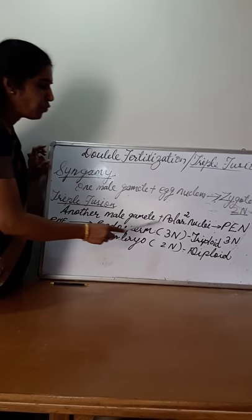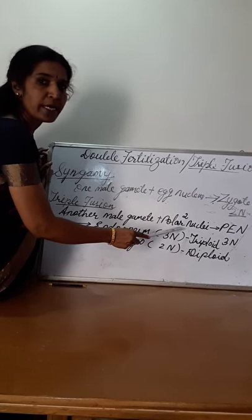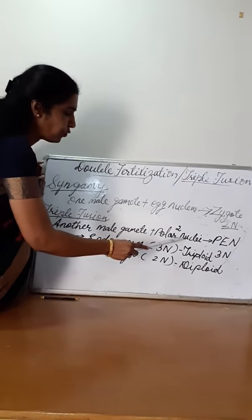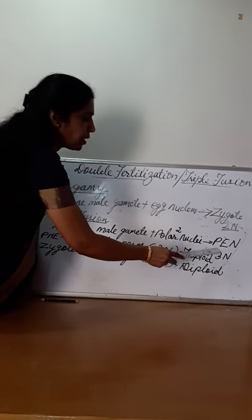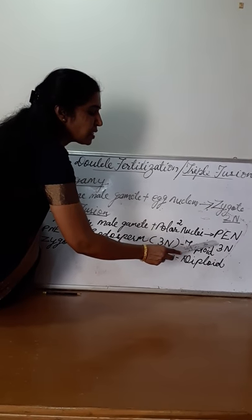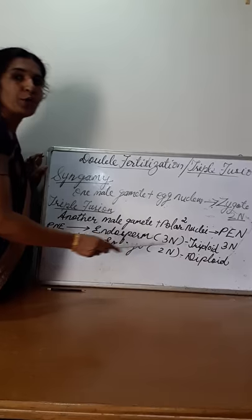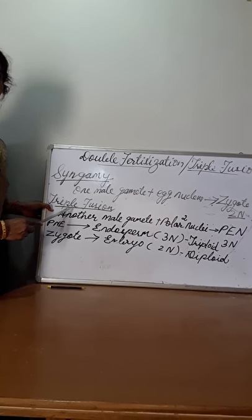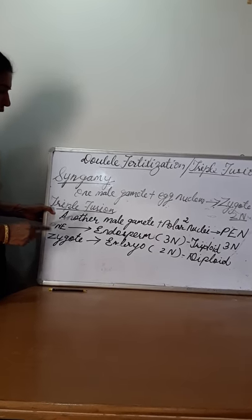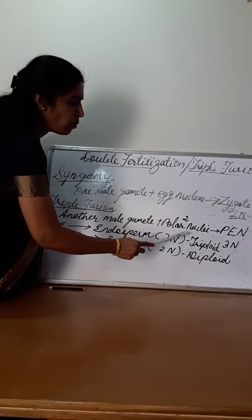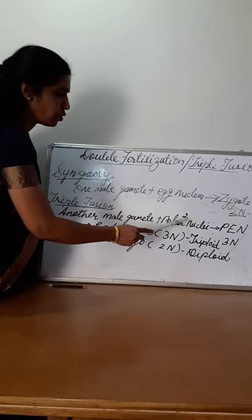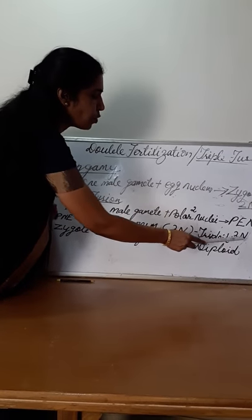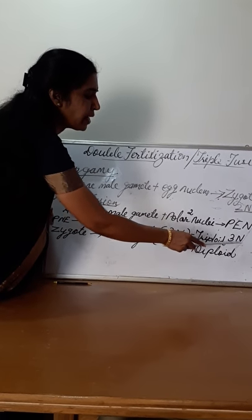Simultaneously, another male gamete fuses with the polar nuclei. In the central cell, there are two nuclei which fuse with the other male gamete. The primary endosperm nucleus (PEN) is formed. This fusion is known as triple fusion — because one male gamete and two polar nuclei, three nuclei fuse together — and the primary endosperm nucleus is triploid in nature.